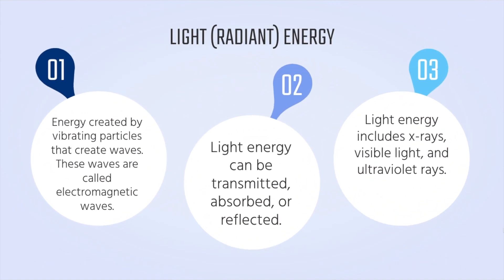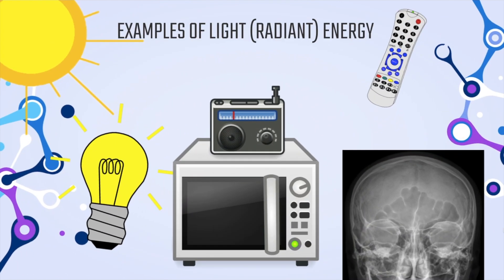Light or radiant energy. Energy created by vibrating particles that create waves is light energy. These waves are called electromagnetic waves. Light energy can be transmitted, absorbed, or reflected. Light energy includes x-rays, visible light, and ultraviolet rays, just to name a few. Here are some examples of light or radiant energy: a light bulb, our sun, radio waves, microwaves, x-rays, and even infrared rays that come out of a remote control.